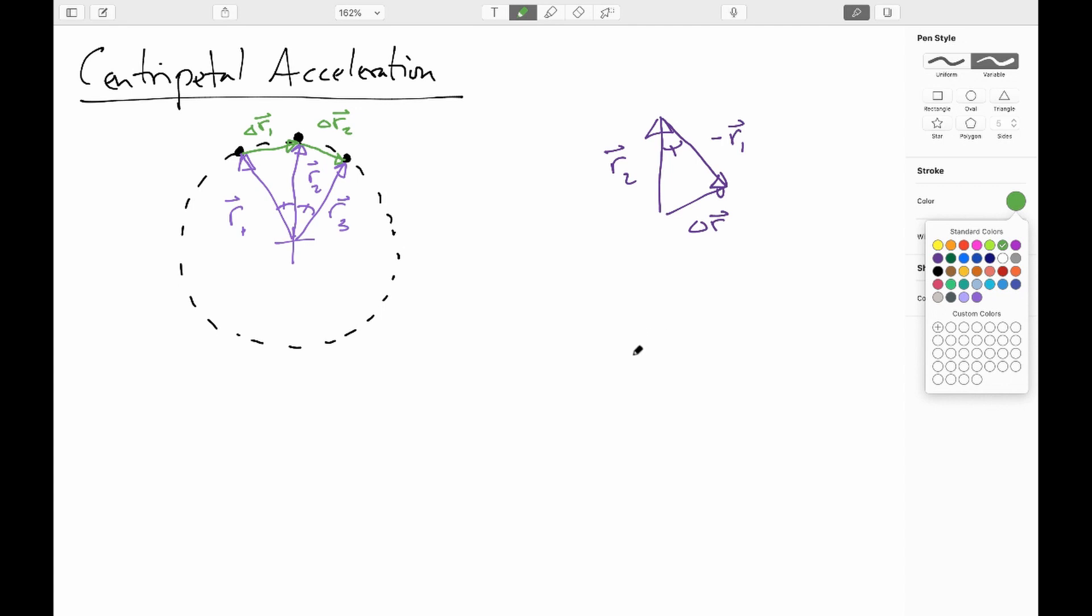And similarly, we can say my delta R2 pointing down to the right means that I have to have my velocity pointing down and to the right at that point. So this would be my V2. And similarly, V1 would point up and to the right, so I subtract it, negative V1.